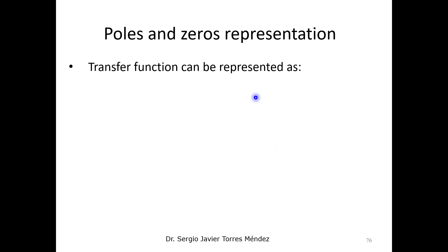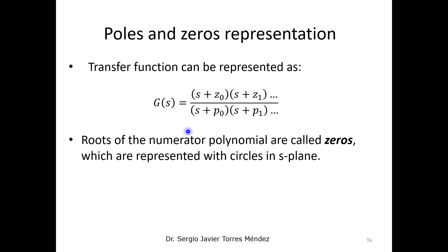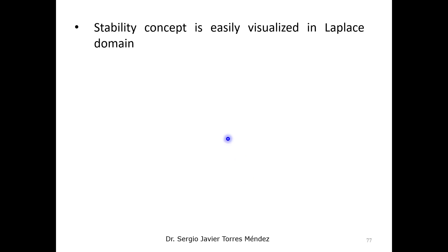The transfer function is very important because it has significant physical meaning regarding its numerator and denominator. It is typical to work with polynomial forms and solve for the roots. The roots of the numerator are called zeros, and the roots of the denominator are called poles.